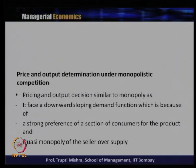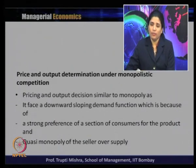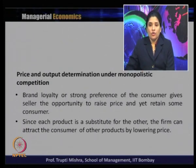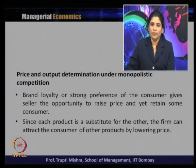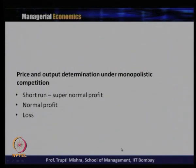Price and output determination in monopolistic competition is similar to monopoly, as it faces a downward sloping demand curve due to strong consumer preference for the product and a quasi-monopoly of the seller over supply. Brand loyalty allows the seller to raise price and retain some consumers. Since each product is a substitute for others, firms can attract consumers by lowering price, giving a downward sloping demand curve.